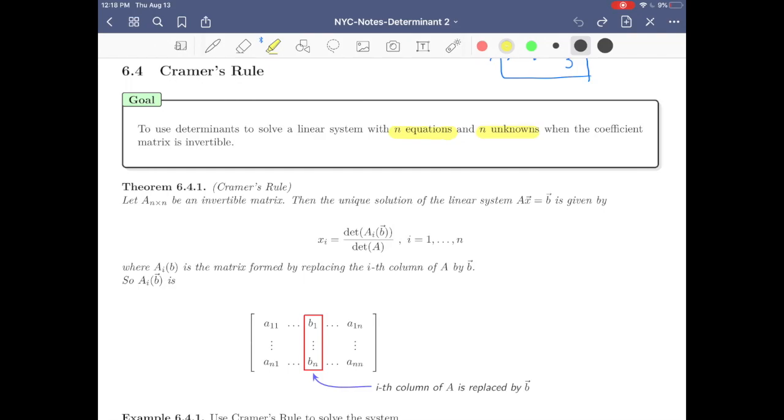So what is the goal? The goal is to use determinants to solve a linear system. However, not all types of linear systems—a very special type: a linear system which has n equations and n unknowns, both of them n, when the coefficient matrix is invertible.